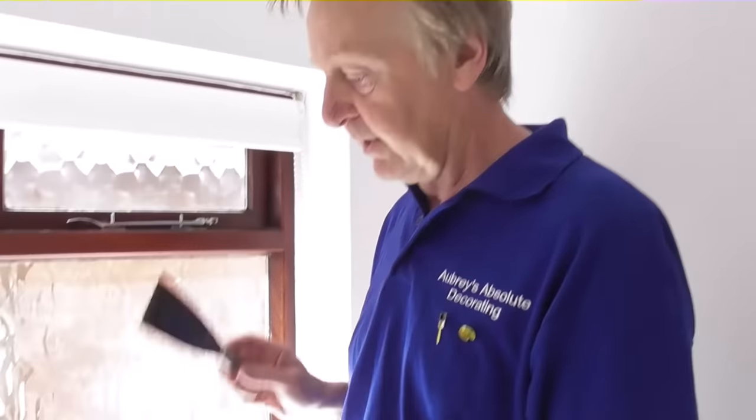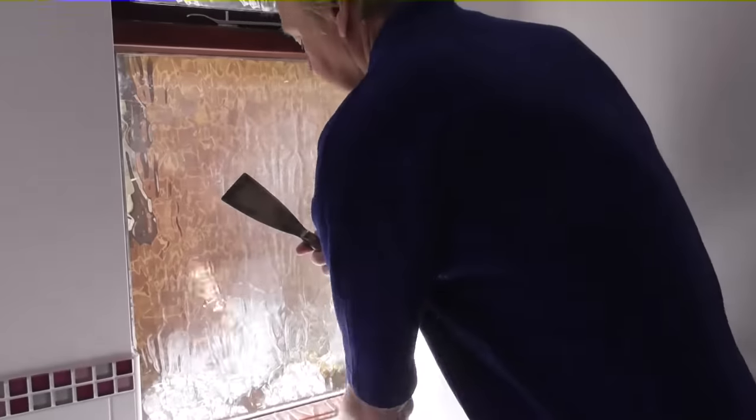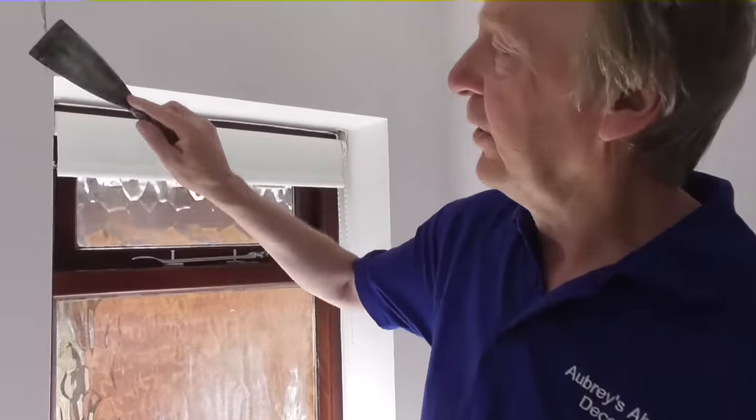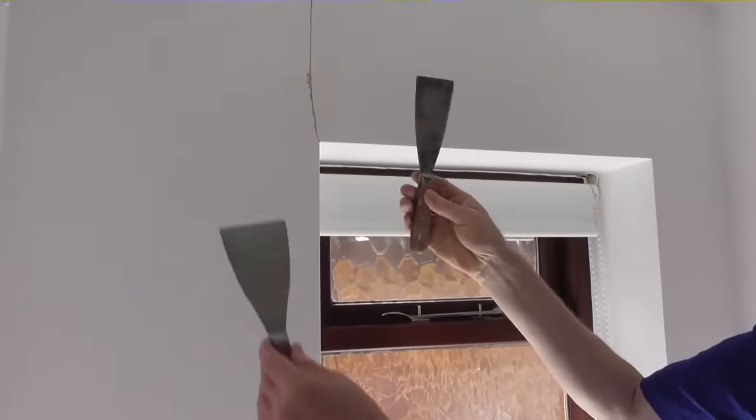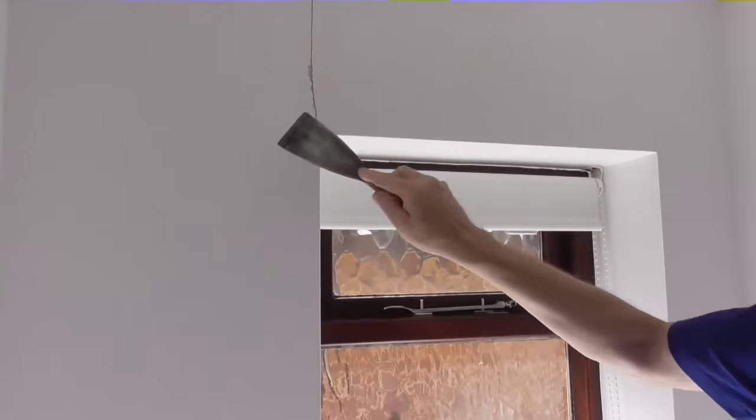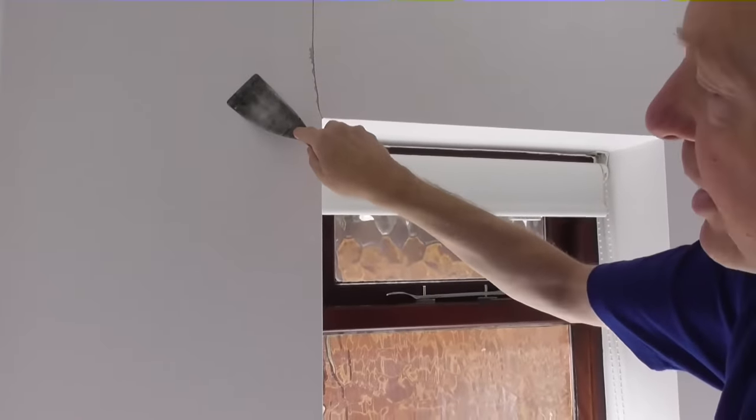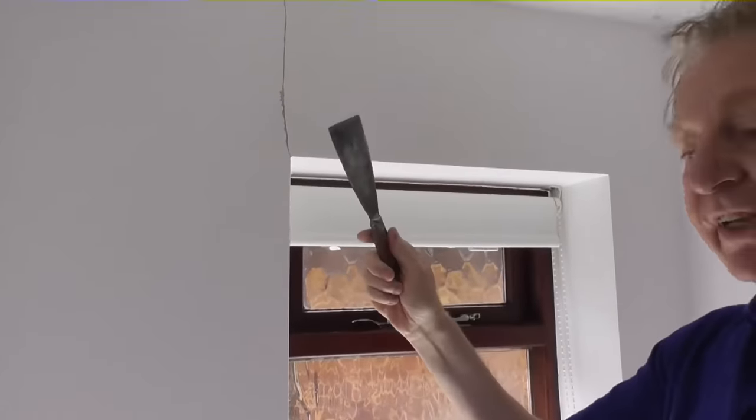Right I've got my filler here that I've already mixed up on the board and I'll be using this filling knife to apply the filler. This is a knife which as you can see is quite bendy but it looks just like a scraper which is solid. I'll be using this because you can use it to force the filler into the hole. So if you can you're better off using one of these filling knives.